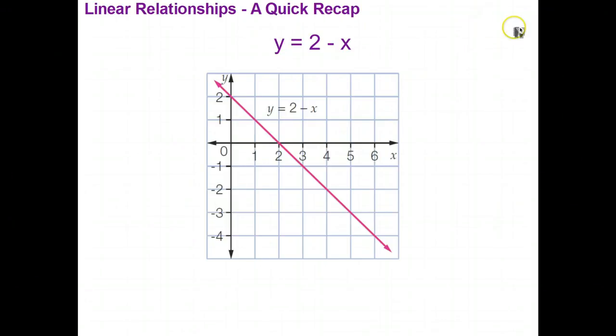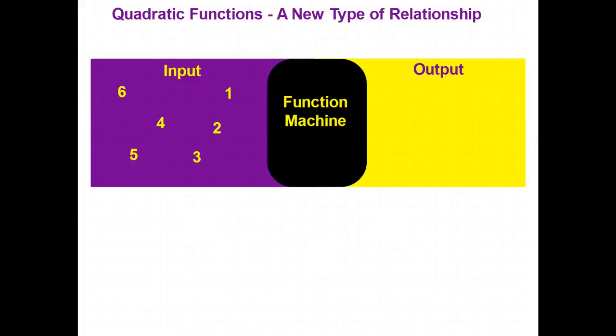So let's find out what a quadratic relationship is. So here I have a function machine. Now a function machine just basically takes a number in, it applies a rule to it, and tells you what the answer is, what the new number is.